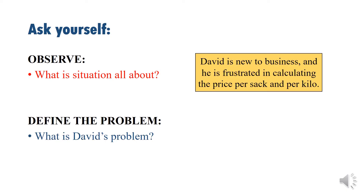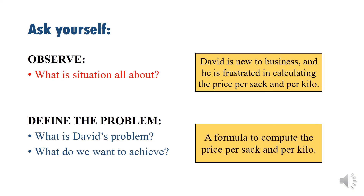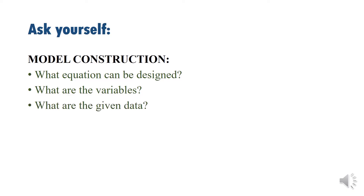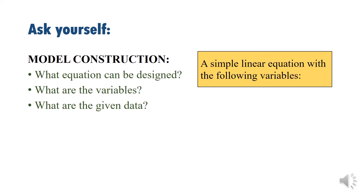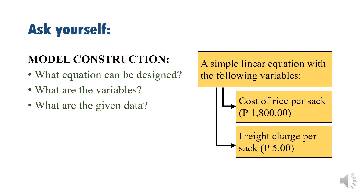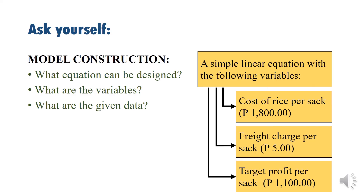What is David's problem and what do we want to achieve? We need a formula to compute the price per sack and per kilo. The variables and given data are: cost of rice per sack — 1,800 pesos; freight charge per sack — 5 pesos; and David's target profit per sack — 1,100 pesos.